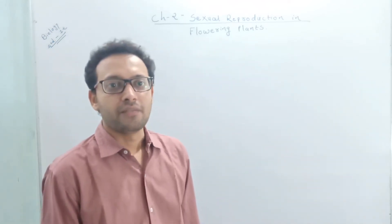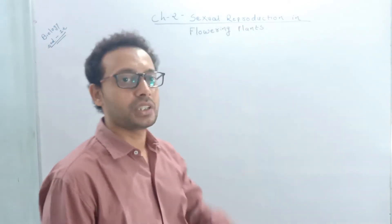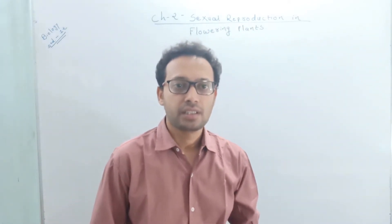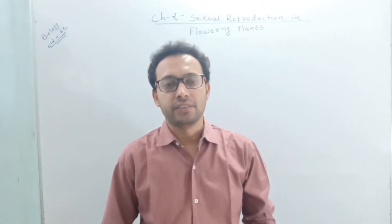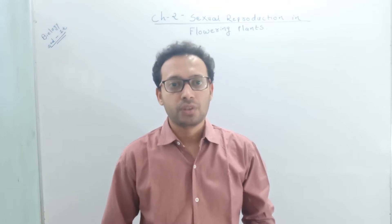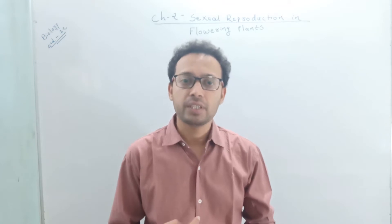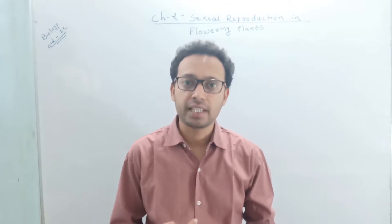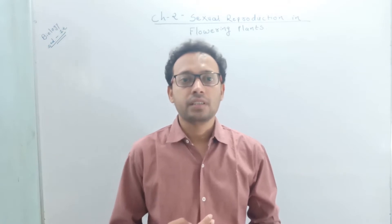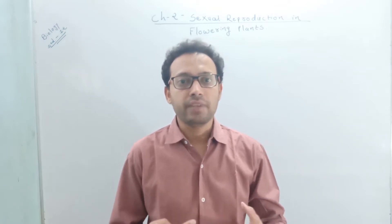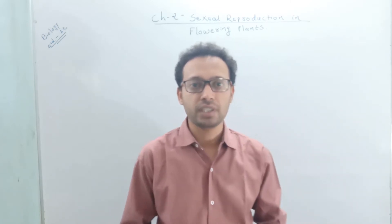Welcome back friends. We have already started with chapter number 2: Sexual Reproduction in Flowering Plants. Let me recap what we have finished. In chapter 2, we have finished the reproductive part of an angiosperm — that is, the flower. We have discussed the different parts of a flower. We started with sexual reproduction and the events and processes. It follows three processes: pre-fertilization, fertilization, and post-fertilization — just like other living organisms that reproduce sexually.